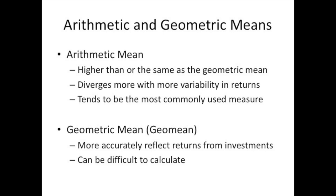If we're looking at treasury bills and treasury notes, the geometric mean and the arithmetic mean will vary less than they will in stocks. As those stocks become more variable, they will have more variability. The geometric mean, in my opinion and many people's opinion, more accurately reflects returns from the investment. The negative is that it can be somewhat difficult to calculate, as you've seen with the GeoMean in homework 1.